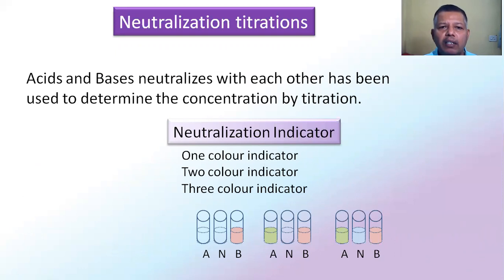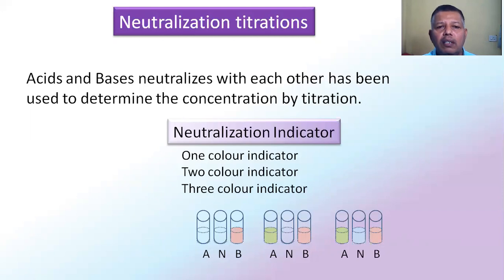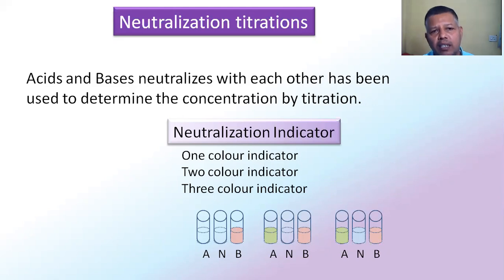Indicators show a change in color. After the end point, some indicators show the change in color at the equivalence point; some show it at the neutralization point; and some show the change in color at a particular pH — when the pH of the solution changes, the indicator changes color. Indicators are organic weak acids or weak bases, or may have a natural occurrence like pigments from the colors of fruits and flowers. Some indicators are useful for acid-base titrations, some for complexometric titration, some for precipitation titration, and some for redox titration.